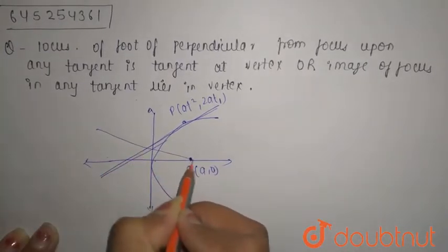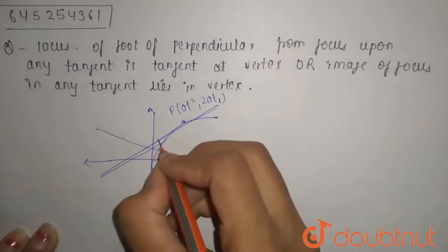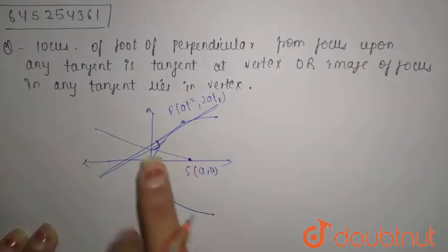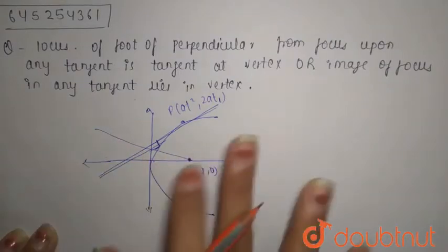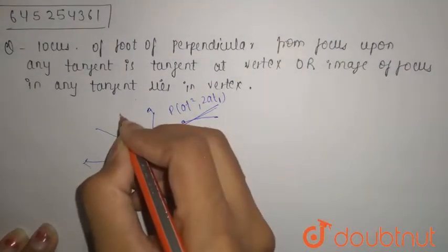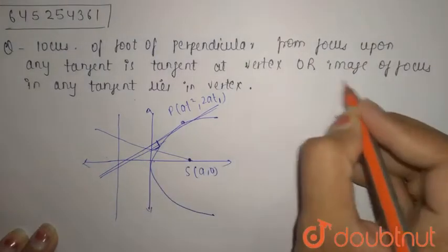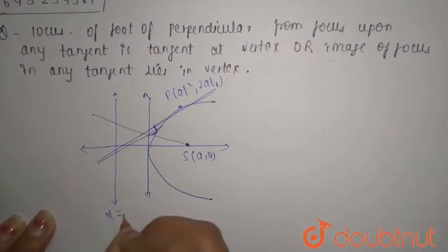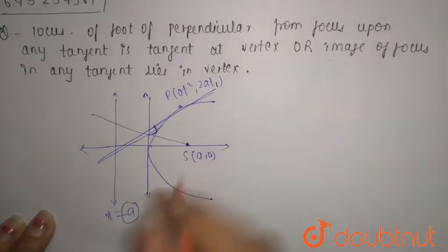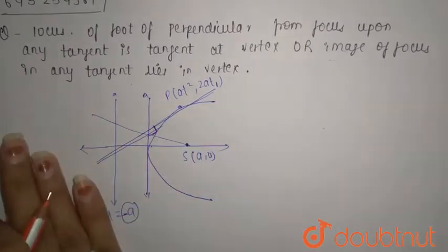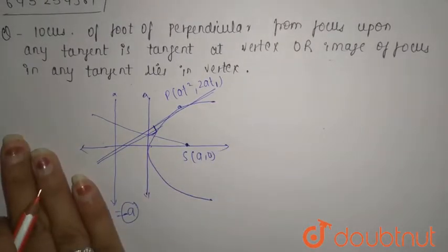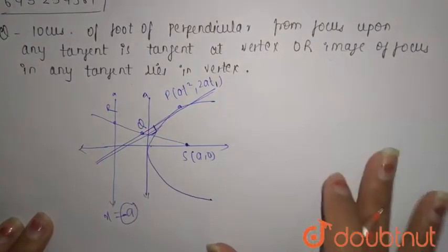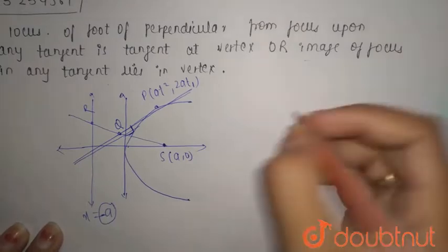From the focus you can make a line that is perpendicular to this tangent. We need the locus of the foot of the perpendicular from the focus. This is the focus, and this is the locus of foot. The image is from the focus. Let this be x equals minus a, because it is on the negative side. This will be point Q, so this is your diagram.